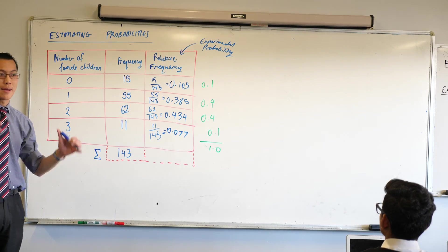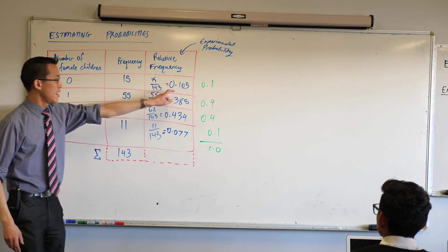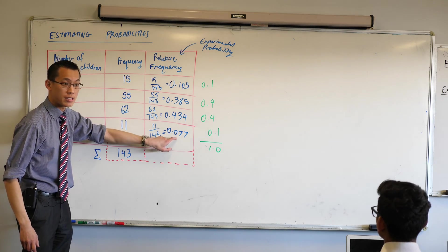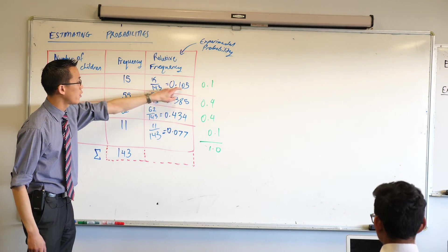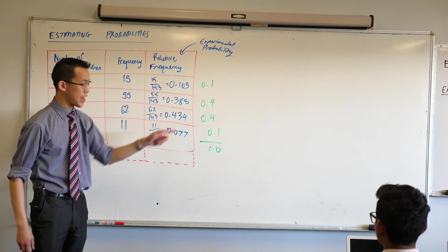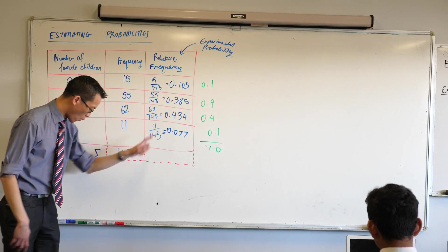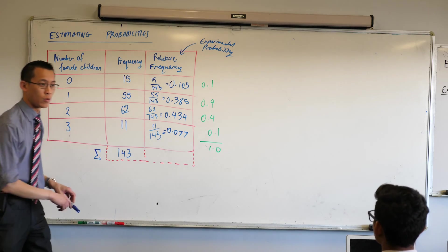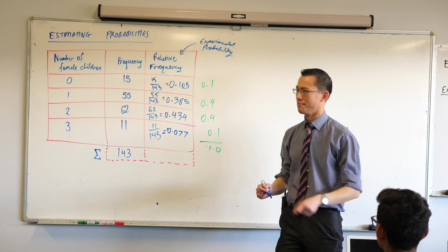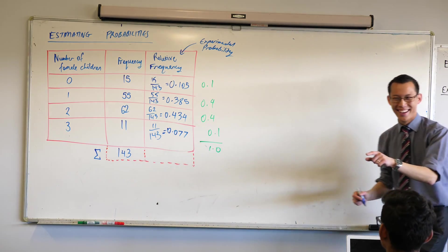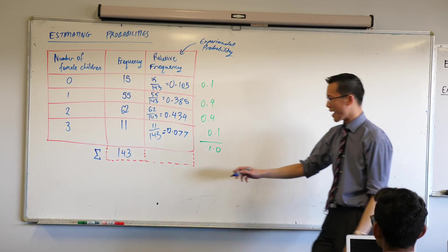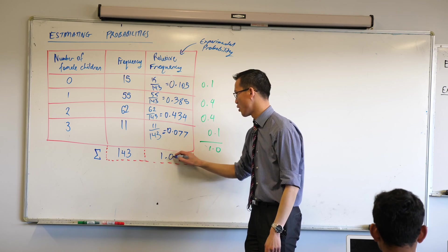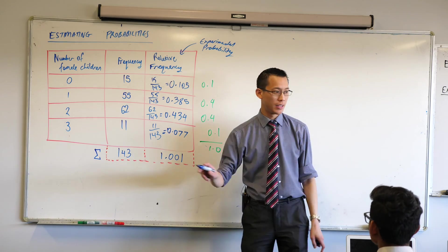Now this time we're all going to do the same calculation. These ones here with three decimal places, can you add these ones up? 0.105, 0.385, 0.434, 0.077. What does that add up to? No it doesn't. Try again. What I calculated beforehand was 1.001, right?